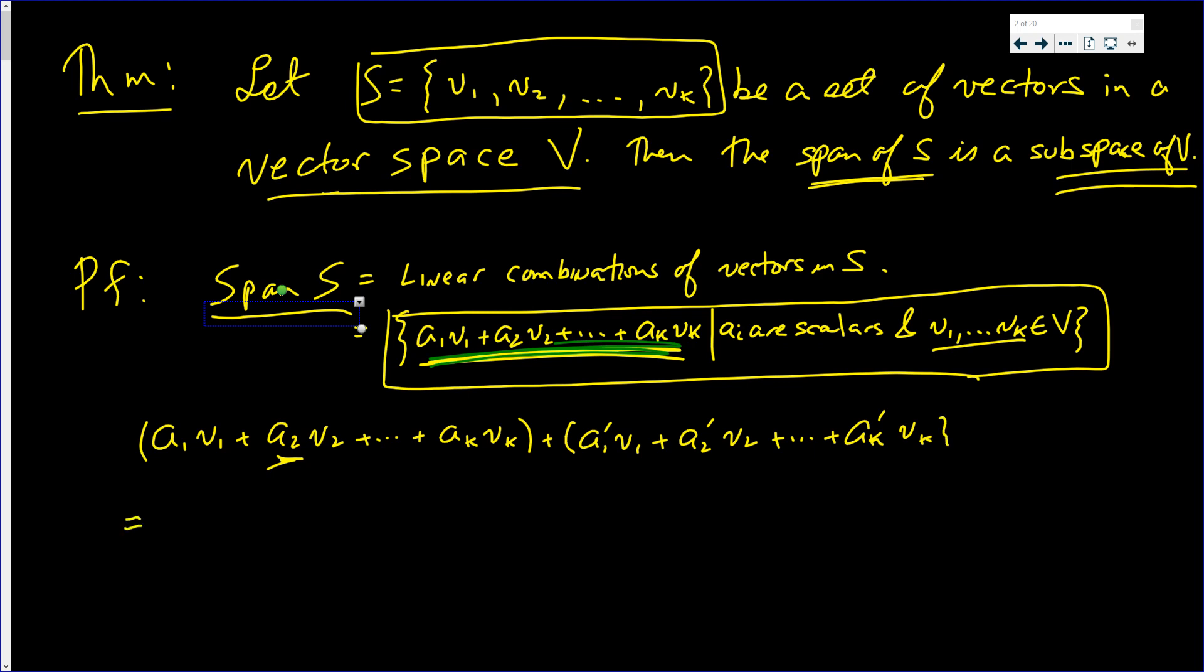Now when we add these, we have a1·v1 plus a1'·v1—I'm going to add those two first—plus a2·v2 plus a2'·v2, and so on, all the way down.